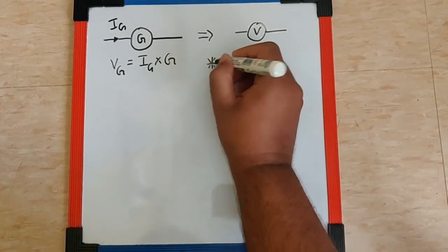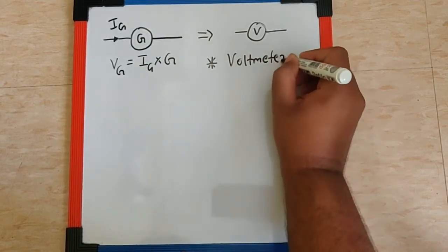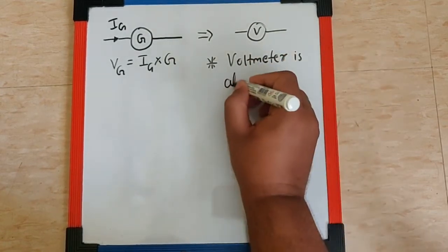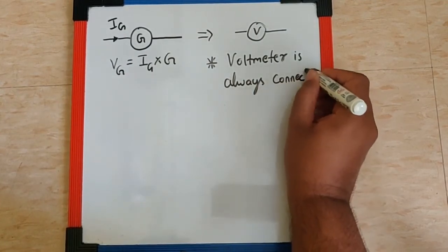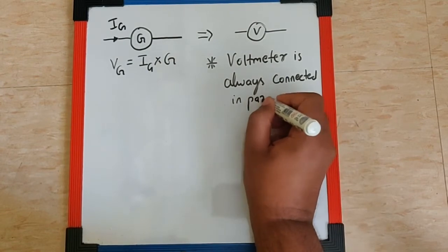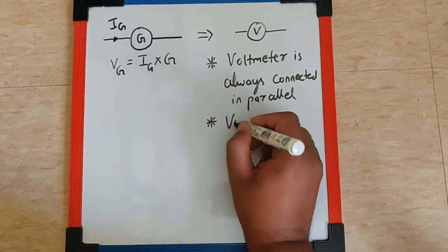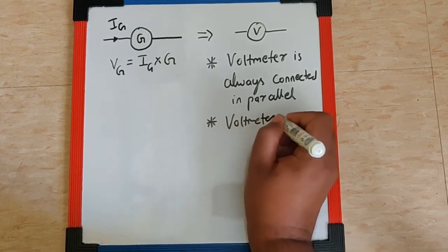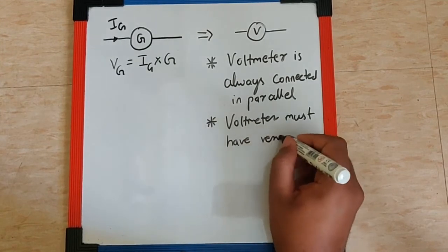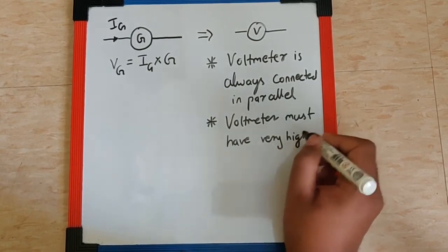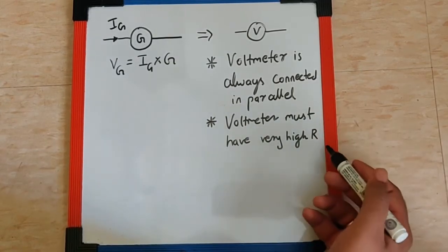First thing we need to know is voltmeter is always connected in parallel with the circuits and therefore voltmeter must have very high resistance or ideally infinite resistance.